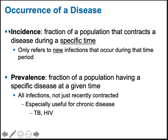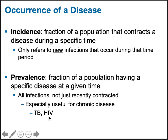Incidence versus prevalence: incidence is the amount of new infections that occur during a specific period of time in a specific population — only new infections. Prevalence includes anybody with that disease, whether it's new or old. We typically look at prevalence for chronic diseases like tuberculosis and HIV, but you could use it for any disease.